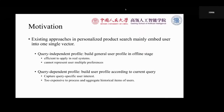The second kind of approaches build a query-dependent user profile according to the current queries in the online inference stage. Different from the first ones, they can capture query-specific user interest. If the current query is 'phone', these approaches can utilize techniques such as query attention to make the user profile pay more attention to related items in user historical behavior. However, it is too expensive to process and aggregate historical items of users at running time as these approaches did.